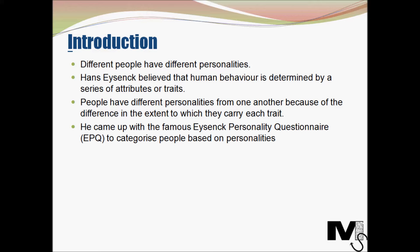He believed that human behavior is determined by a series of attributes or traits. These traits are present in varying magnitudes in each of us, and this is what defines our personality. People have different personalities from one another because of the difference in the extent to which each person carries each of these traits. By isolating, analyzing, and studying these traits we can understand human personality, and through his personality theory he came up with the famous Eysenck Personality Questionnaire, EPQ, to categorize people based on their personalities.